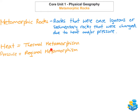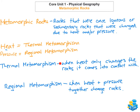Regional metamorphism occurs when heat and pressure are combined to change the rocks — this could happen during a period of fold mountains being built. Thermal metamorphism is when heat only changes the rocks it comes into contact with, such as during volcanic activity, while regional metamorphism is when heat and pressure together change rocks during fold mountain building.